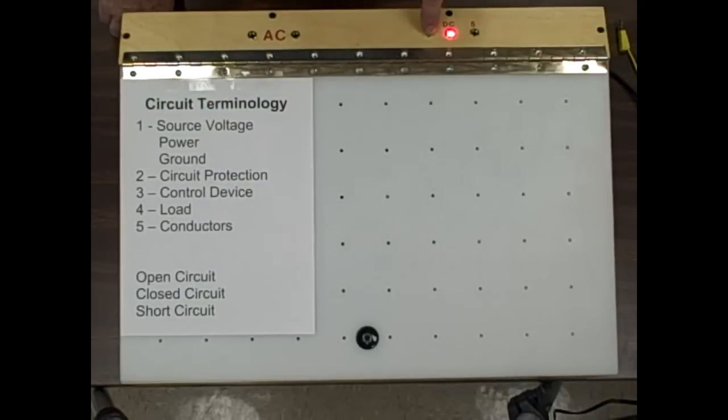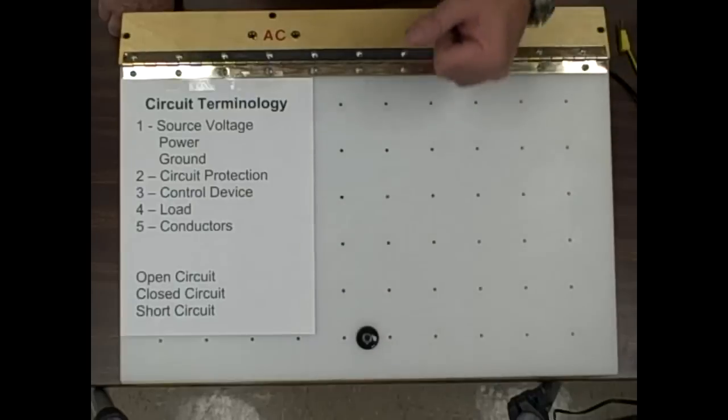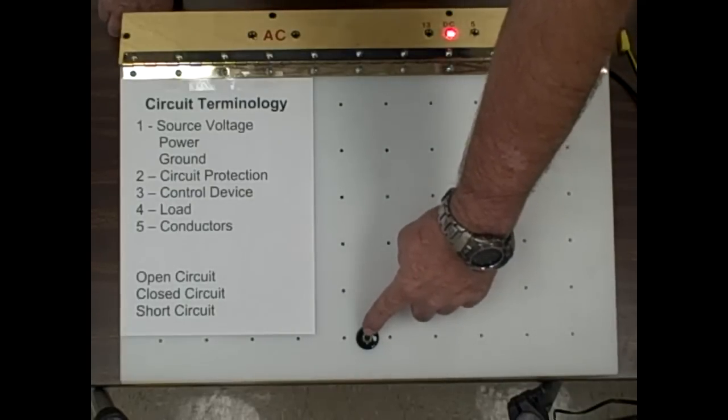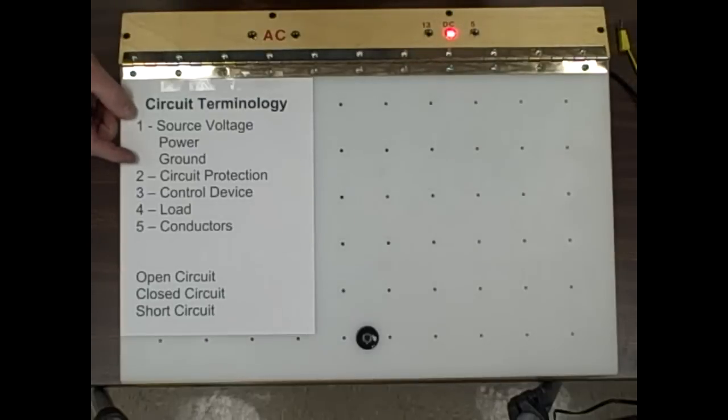In most cases you look at the top for power and the bottom for a ground and it also is easy to follow projects from top to bottom. Think of this as a positive post of the battery. Think of this as a ground post of the battery. So it takes care of our source voltage.